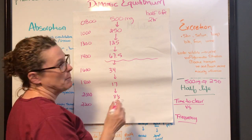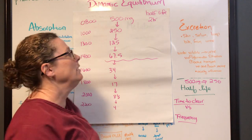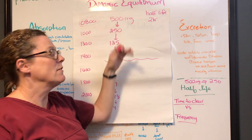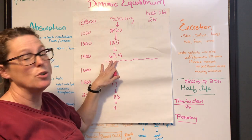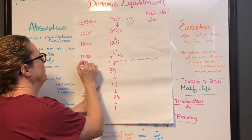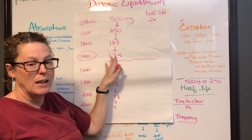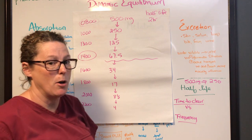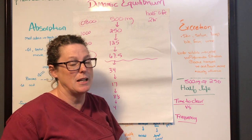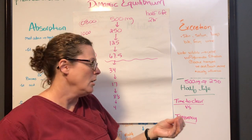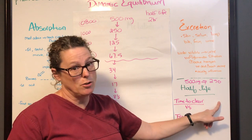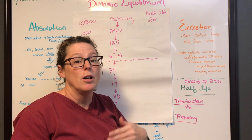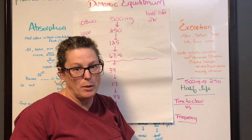We use four half-lives as a general rule for scheduling the next subsequent dose. So if a medication has a two-hour half-life, I would give it at 8 o'clock, and four half-lives later at 2 o'clock I would schedule it again, then four hours after that I would schedule another dose — this ensures the body always maintains a therapeutic level. The time to clear a drug from the body is very different from the scheduling frequency of medication administration.